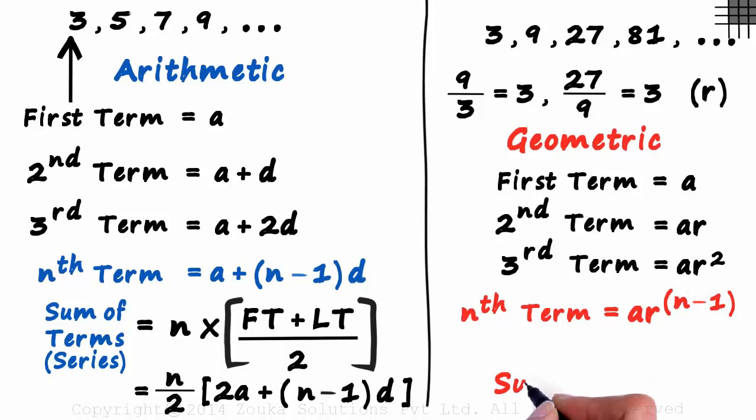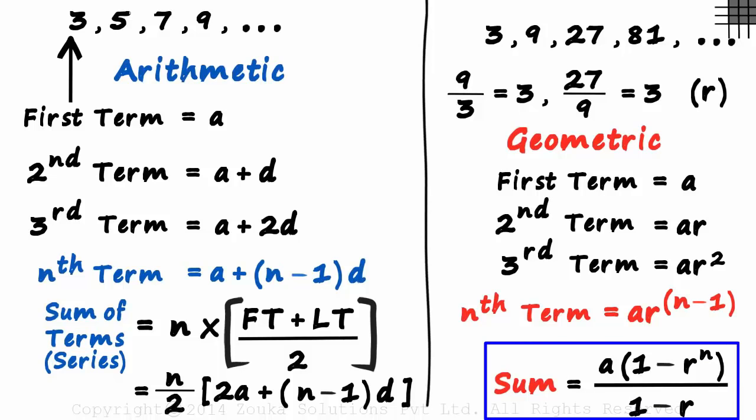And what will be the sum of the terms in a geometric sequence? This is just a formula you need to know: A times 1 minus R raised to n over 1 minus R. The proof of this is pretty easy and it is good to know, but you don't really need to know it for your exams.